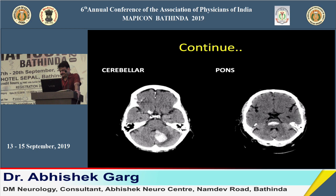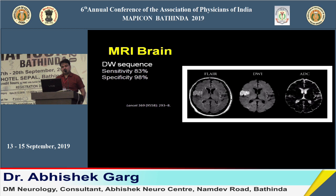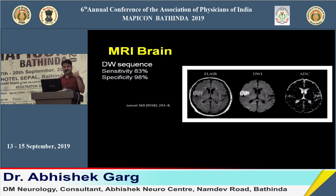MRI brain, particularly diffusion-weighted sequences, has high sensitivity of 83 percent to identify ischemia. However, if MRI is not available in-house, we should never refer patients or delay for MRI when treating acute ischemic stroke within the window period — it wastes critical time. On the basis of CT scan alone, we can decide whether to thrombolyze the patient. MRI brain is never needed for acute management of stroke.